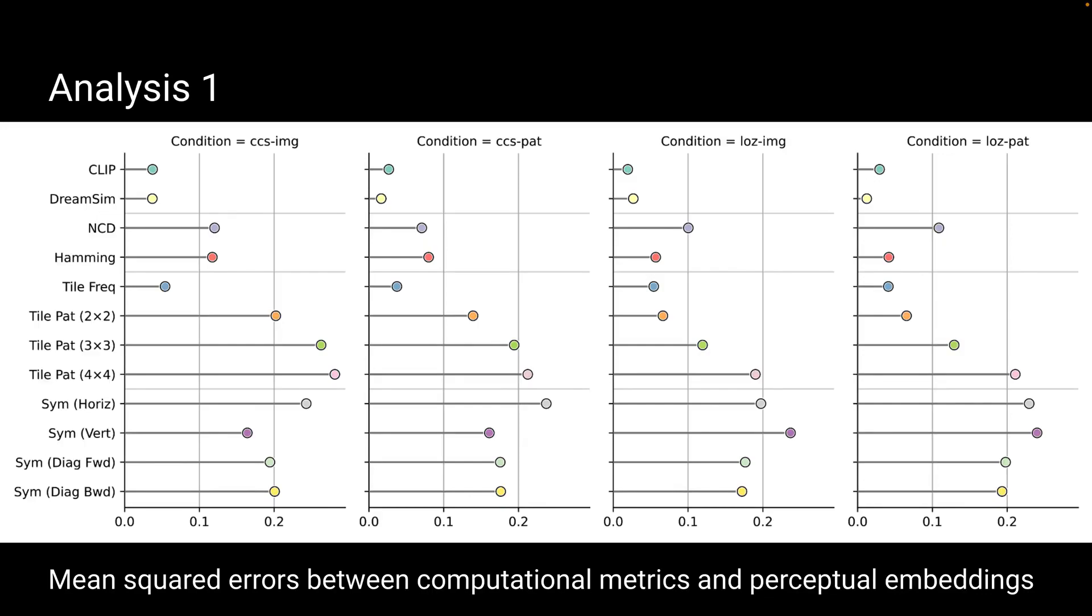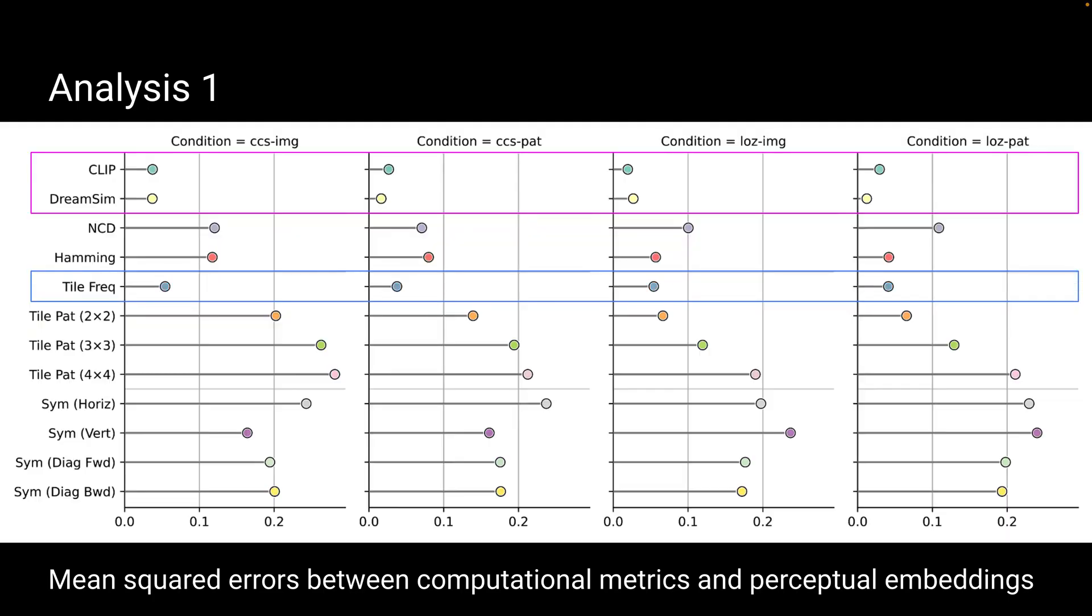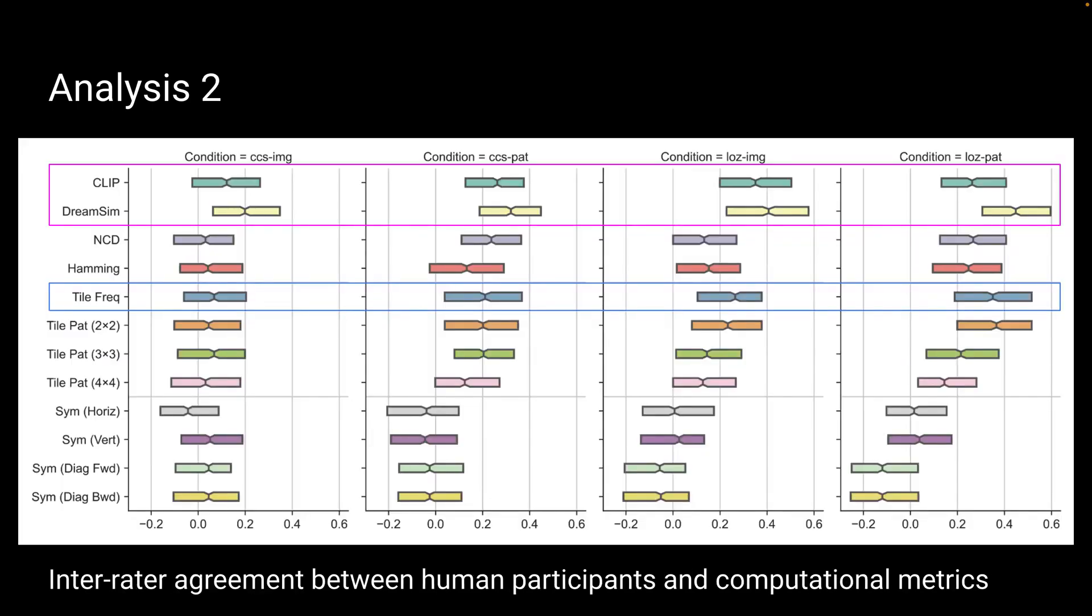We plot the results for the four experimental conditions. Here is analysis 1. On the y-axis, we have all configurations of the computational metrics. The x-axis shows mean squared error. I want to highlight computer vision metrics, which perform very well, and the second-best alternative tile frequencies from the procedural content generation literature. These are results of analysis 2 with the same highlight.